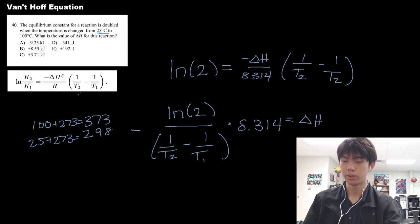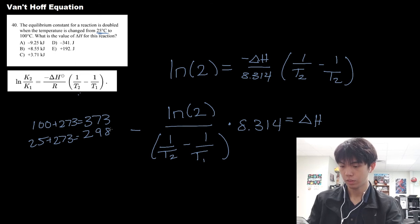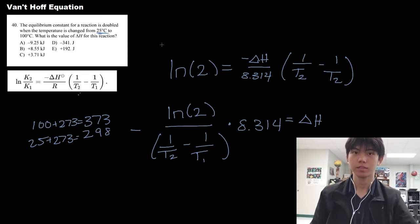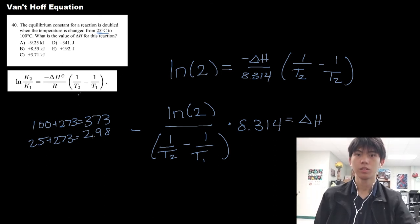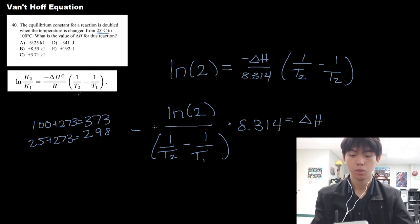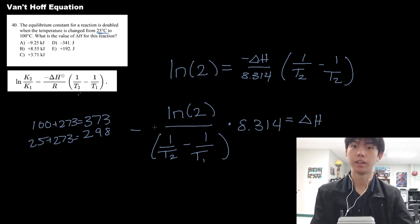So 1 over 373 minus, and we do 1 divided by 373 minus 1 divided by 298.